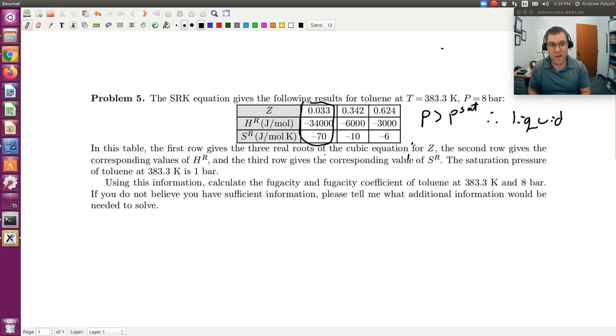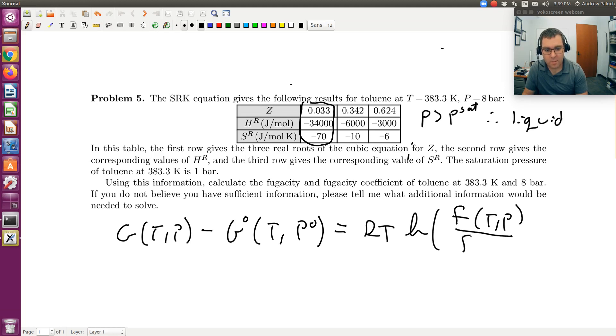Remember that for an isothermal process, our definition of fugacity comes from: for an isothermal process, I'll write G at T and P minus G naught. So at the same T, but pressure P naught is equal to RT log F at T and P minus F naught. And this would be at T and P naught.